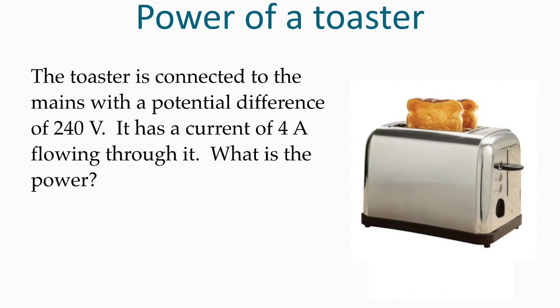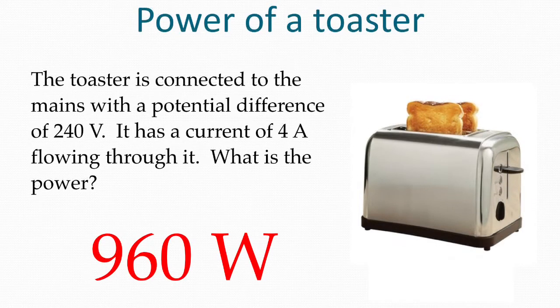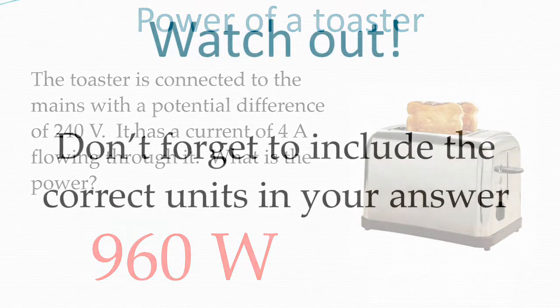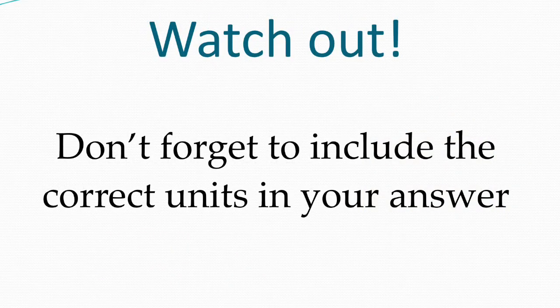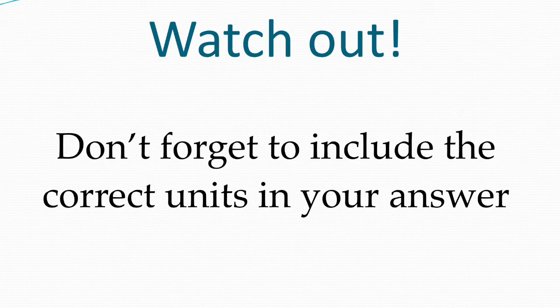Now it's your turn to have a go. This toaster is connected to a mains with a potential difference of 240 volts and it has four amps flowing through it. What is the power? Please pause the video now and do the calculations in your book. You can press play when you're ready. It would be 240 volts times four amps which gives a power of 960 watts. Always remember to work in base units when you're doing calculations. So work in watts rather than kilowatts and amps rather than milliamps.